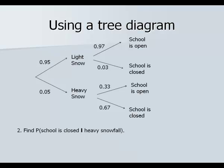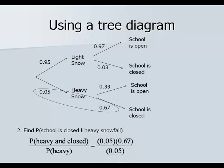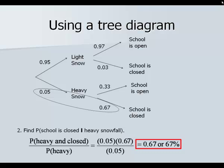Number two asks: probability that school is closed given it was a heavy snowfall. We focus on the bottom part of the tree diagram. The formula gives us the probability of both heavy and closed divided by the probability of the given, which is heavy snowfall. The probability of both is 0.05 times 0.67 on top, divided by 0.05. Multiply and divide: 0.67 or 67 percent is our final answer.